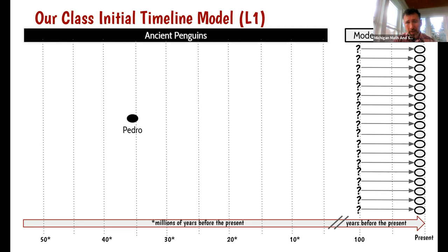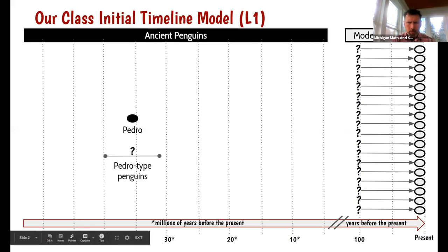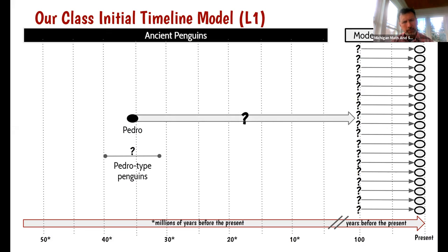Of course, we still don't know that yet. So we're unsure about that again. This line shows that we don't know how long Pedro-type penguins lived on Earth. But we do know that at some point in the past, they no longer were living on Earth, because they're not alive today. So that's something else we need to figure out. If Pedro lived 36 million years ago, and there are 18 types of modern penguins alive today, what happened in between? How are they connected? Of course, we don't know that either. So we've got more we need to figure out.